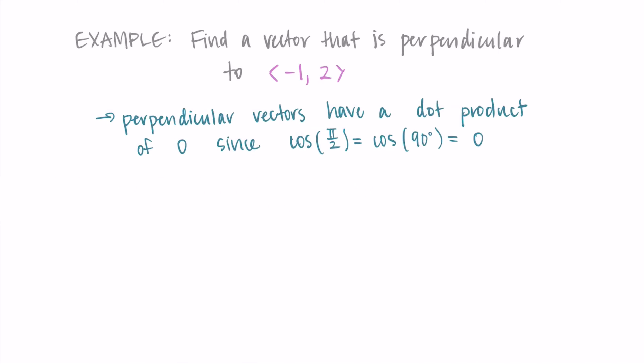So we're going to think about a vector, let's call it x and y. And we're going to do the dot product of it with this vector negative 1, 2, and set it equal to 0, because we're knowing that the dot product of perpendicular vectors is 0.